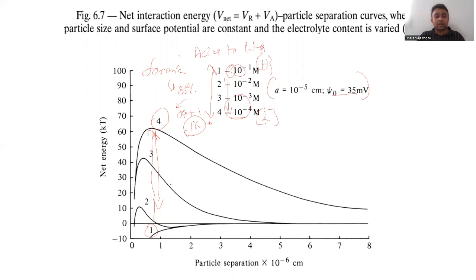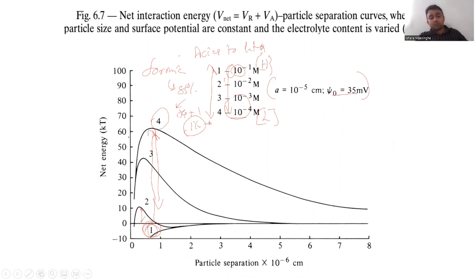When we increase the electrolyte concentration, the primary maximum energy barrier is reduced. At very high concentrations, there is essentially no barrier and the system coagulates directly. At low concentrations there remains a small barrier before coagulation occurs.